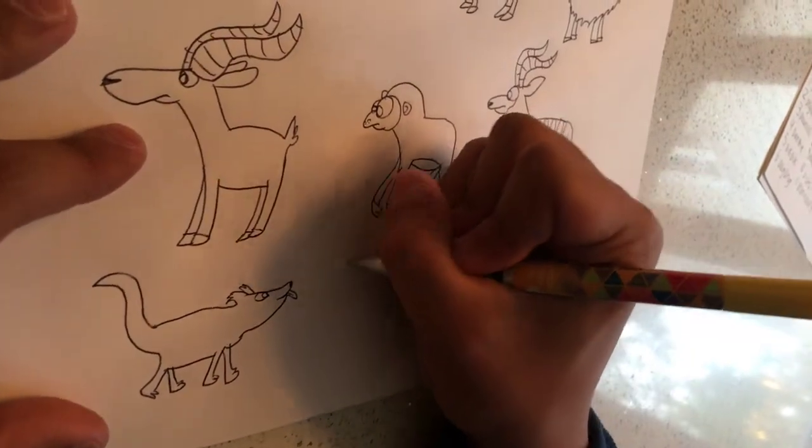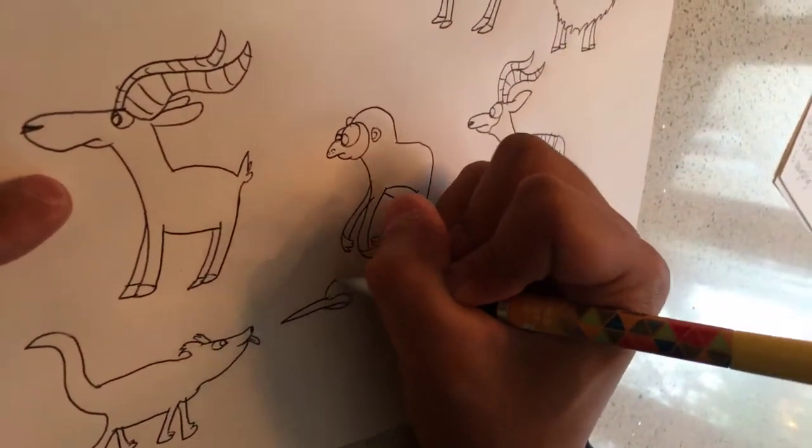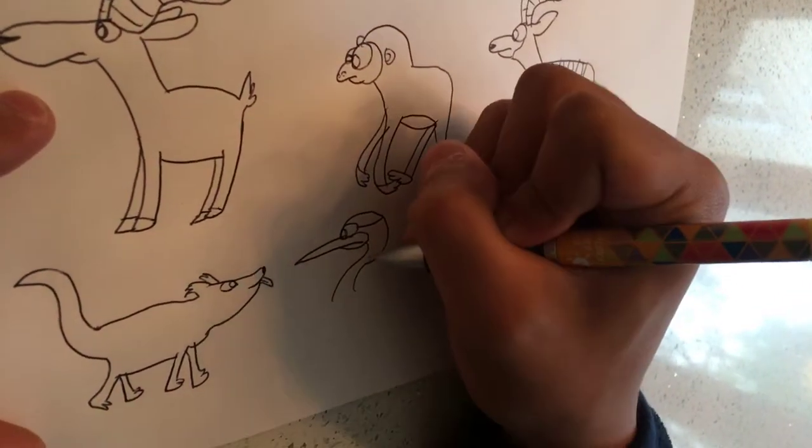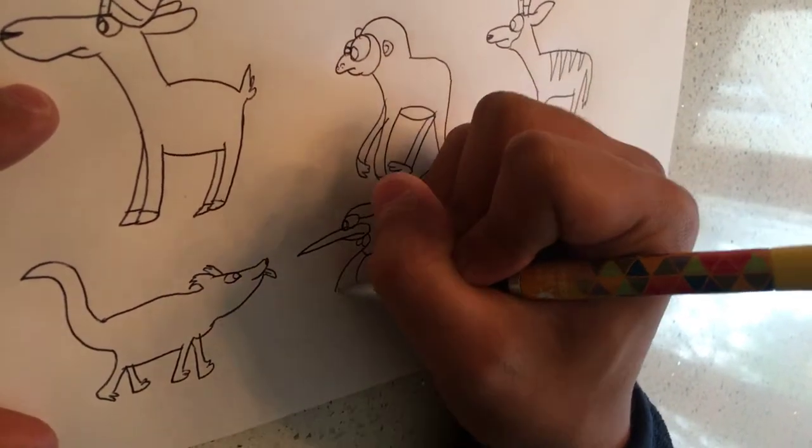B is for brolga. The brolga is also known as the Australian crane. The brolga needs a waddle over here.